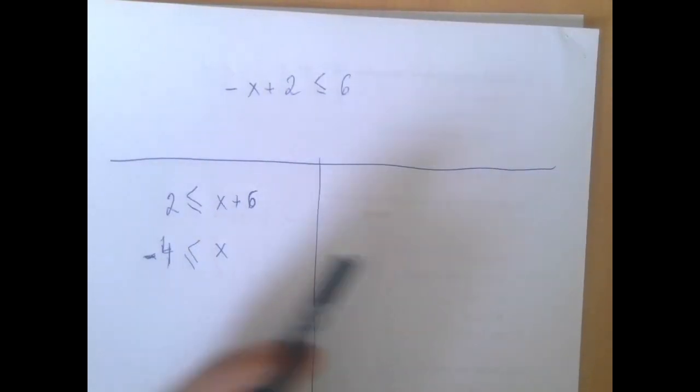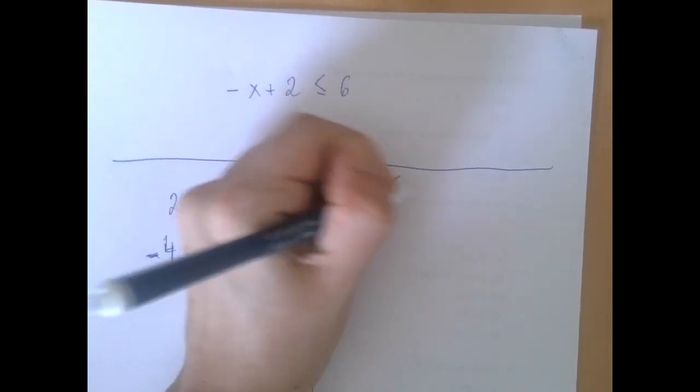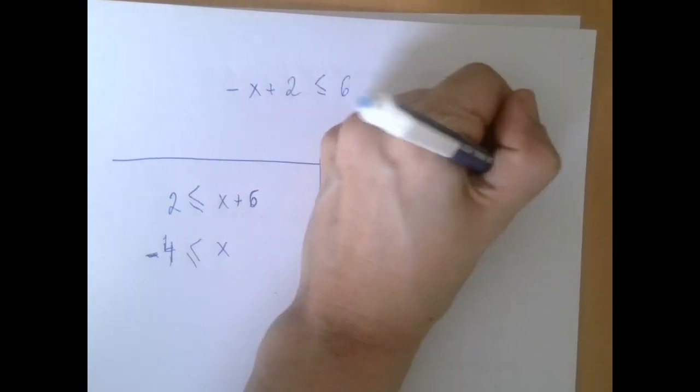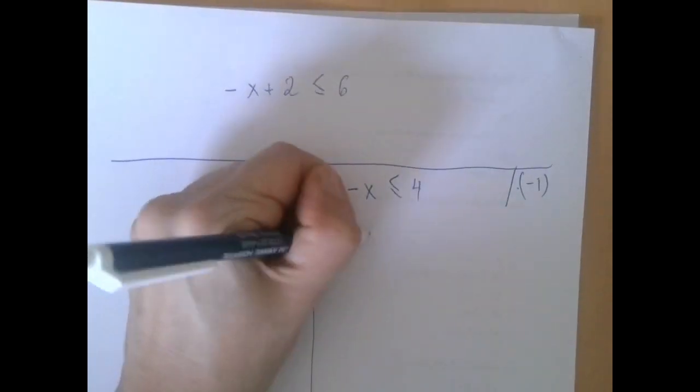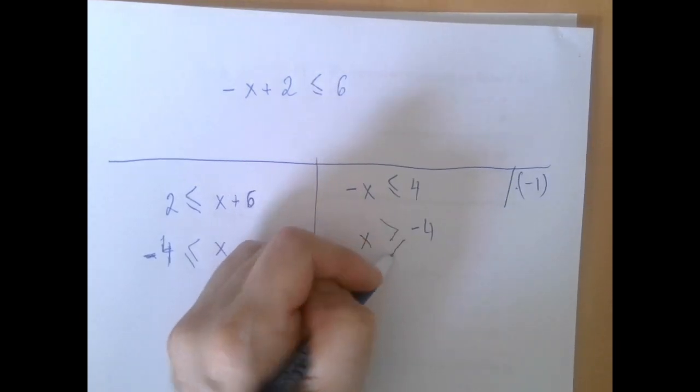The official method would be subtract 2. Then you get negative X is less than equal than 4. And now divide or multiply both sides by negative 1. And then you get X here, negative 4 here. And the inequality sign must flip.